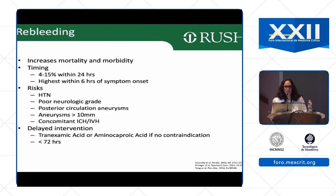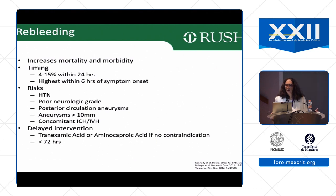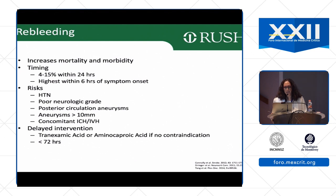The problem with re-bleeding is that it increases mortality and morbidity. The highest risk is in the first 24 hours, seen in about 15% of patients, with the most common timing being in the first six hours of symptom onset. Risks for re-bleeding include high blood pressure, poor neurological grade at presentation, posterior circulation aneurysms — in particular basilar tip aneurysms — large aneurysms (greater than 10 millimeters), concomitant intracerebral hemorrhage, and intraventricular hemorrhage.